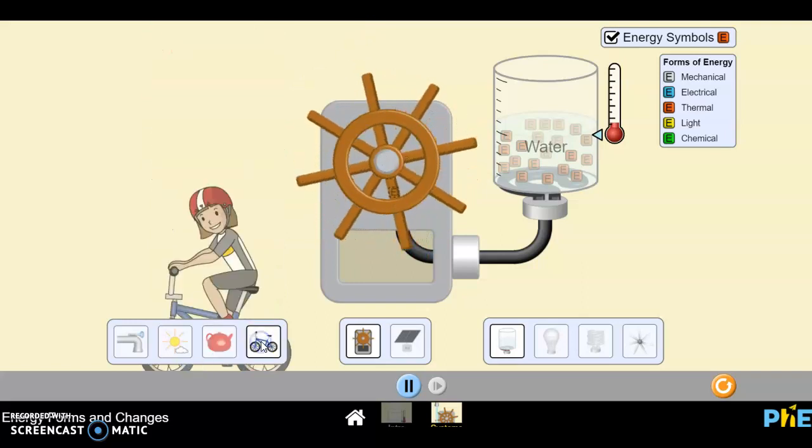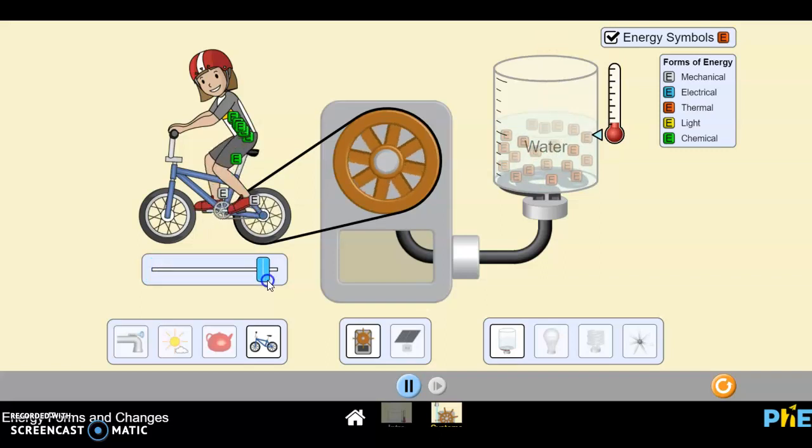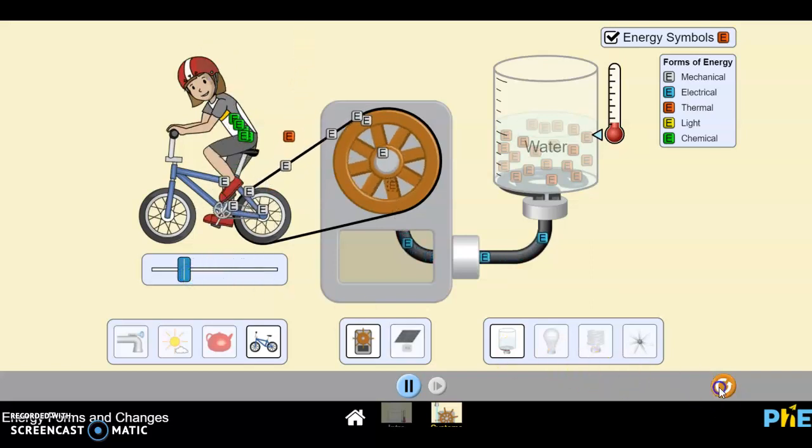We also have a girl on a bike, and you can control the speed which she pedals, from not pedaling at all to pedaling faster. And if you're really paying attention, you see that she has energy inside of her. So I'm going to reset this again.